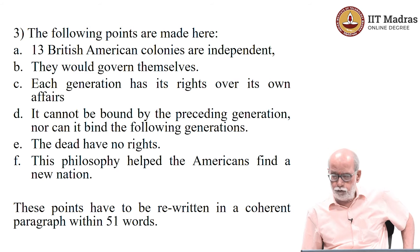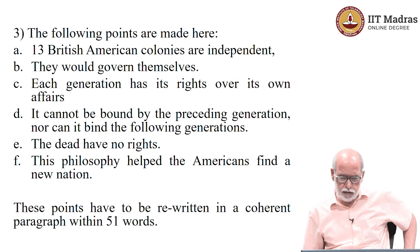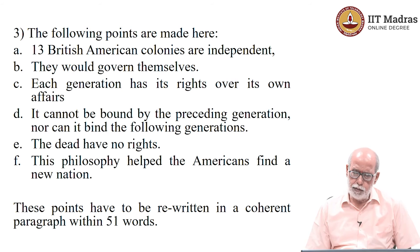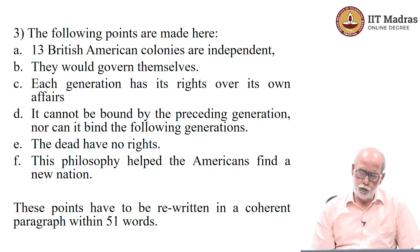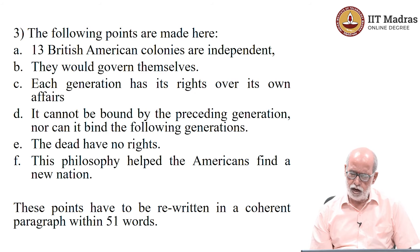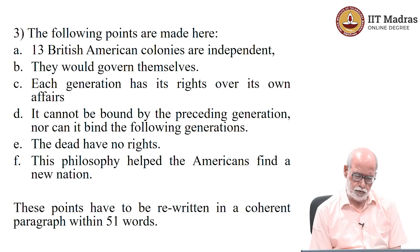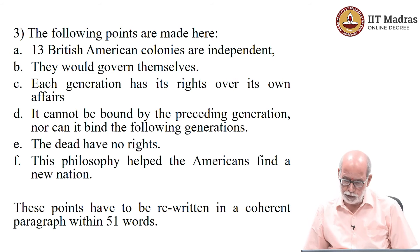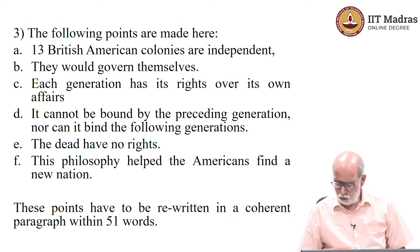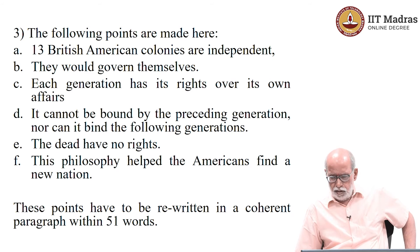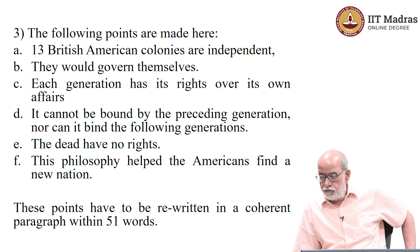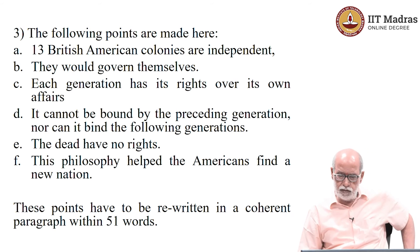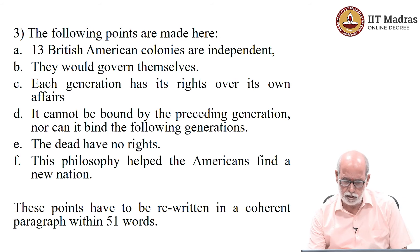If you have read it carefully and made points, then you and I can compare our points. For example, I think the following points have been made. Number one: the 13 British American colonies are independent. Once these points have been identified, they should also be rewritten to make a coherent paragraph — in this case within 51 words, because the original passage has a little over 150 words, about 156 or so. Therefore, according to convention, its précis should not exceed 51 words.